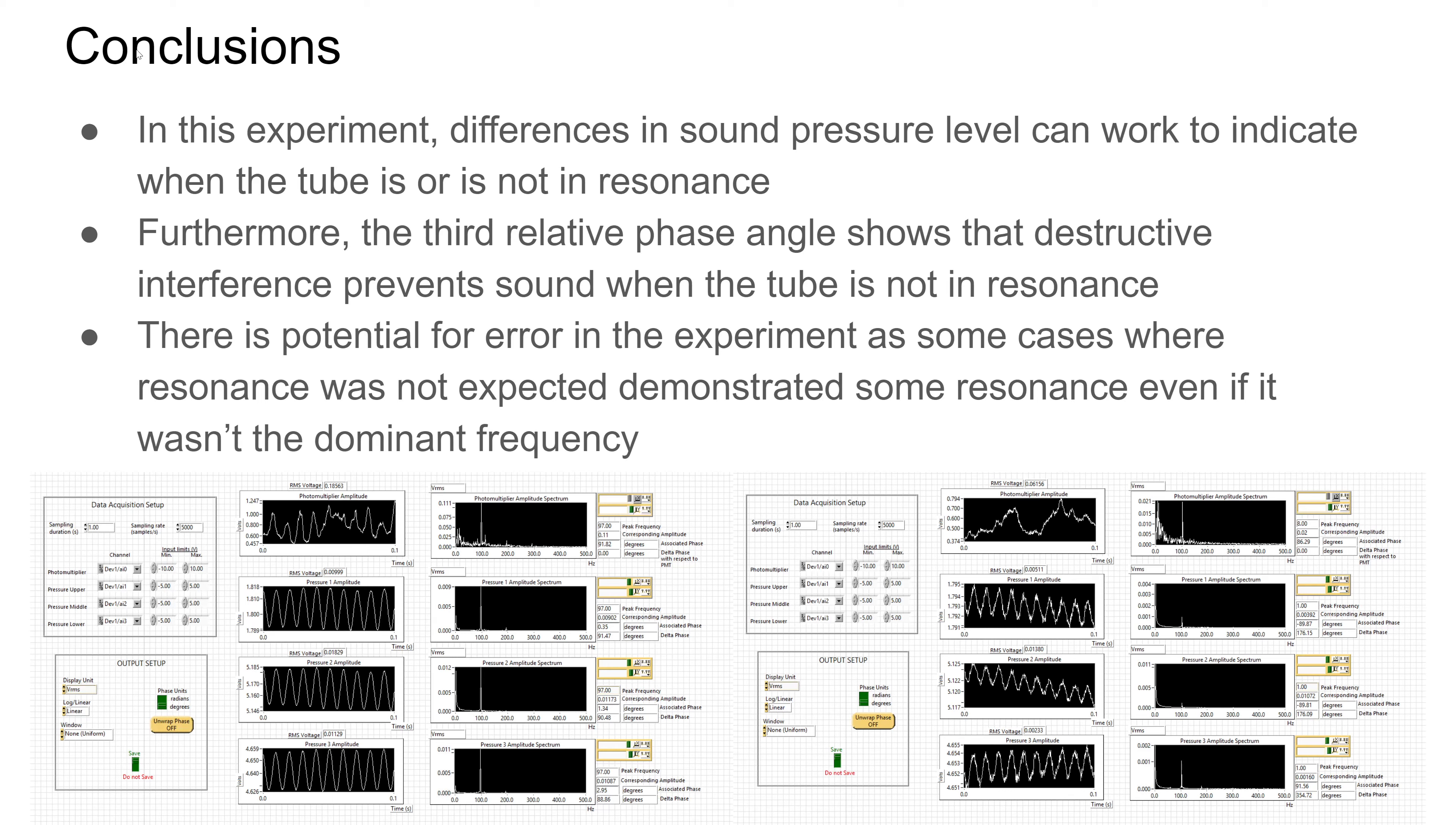So conclusions here. In this experiment, we can clearly see that sound pressure level indicates when the tube is in resonance or not. So we have a case where the sound pressure level drops at the top of the tube when it is not in resonance, whereas it remains relatively steady throughout the tube when it is in resonance.